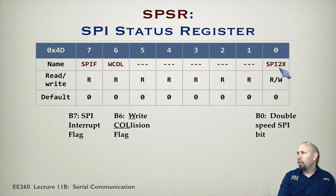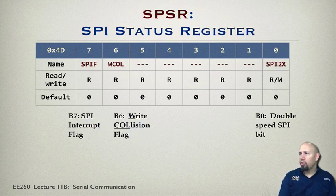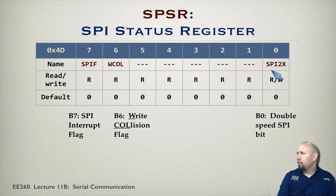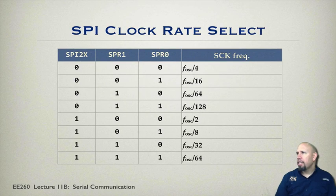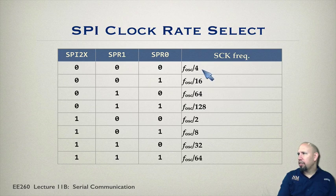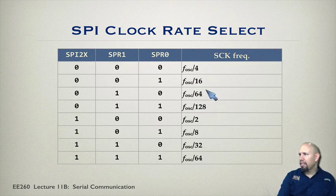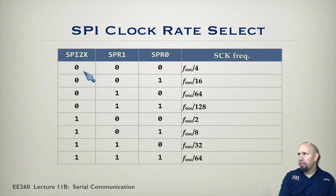The SPI status register has only three bits to concern ourselves with: the interrupt flag, which is set whenever an interrupt is occurring; the write collision flag, set if two things try to write at the same time; and a double-speed bit that can double the clock rate. The SPI clock rate depends upon that double-rate bit and the two SPR rate bits in the control register, giving various clock frequency options — notice some values appear when using double speed.